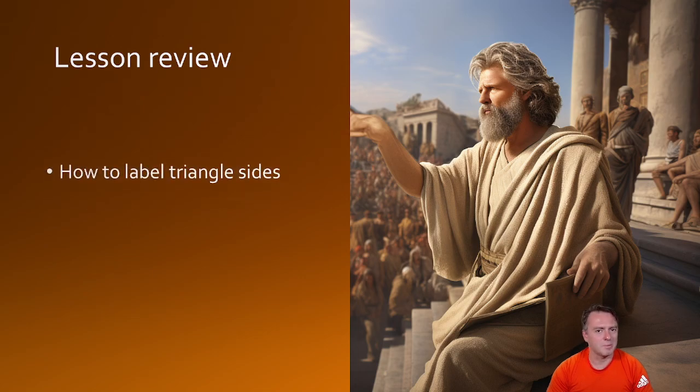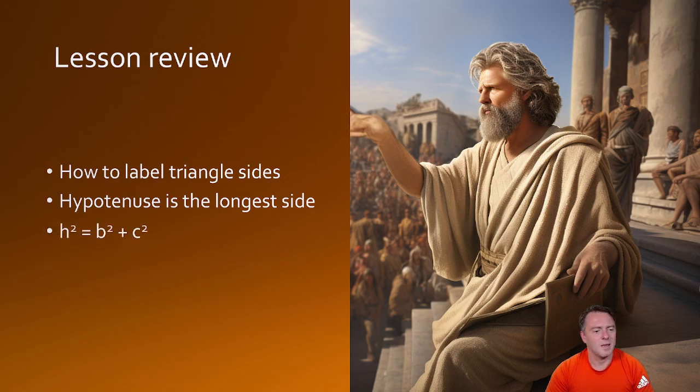Cool. So a quick little review, you should know now how to label the triangle sides. The hypotenuse is always the longest side. And we use this rule, h squared is equal to a squared plus b squared.